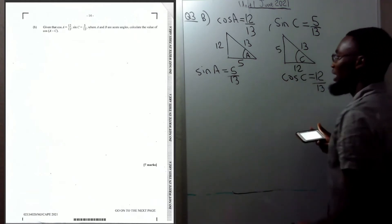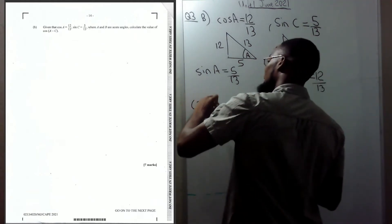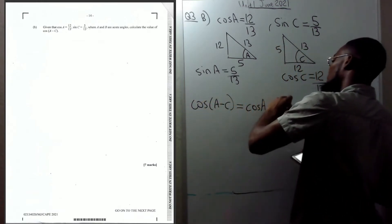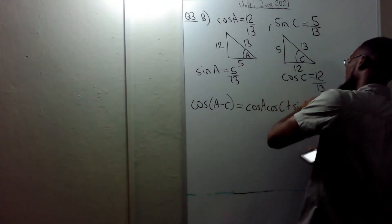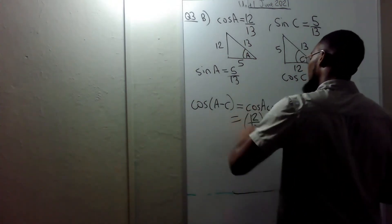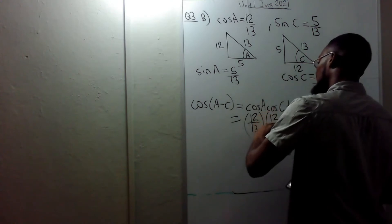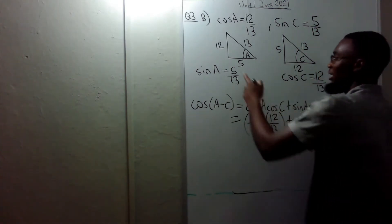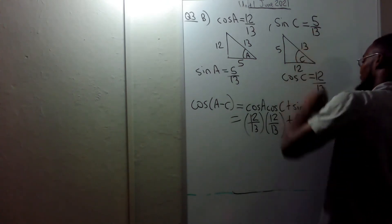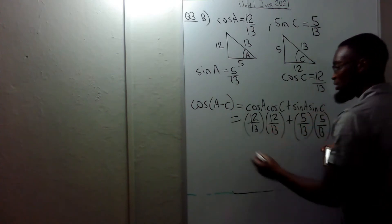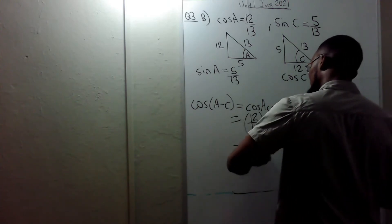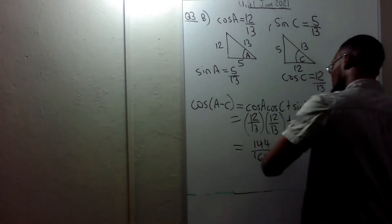Calculate cos(a − c). The formula is cos(a)cos(c) + sin(a)sin(c). That's (12/13)(12/13) + (5/13)(5/13).